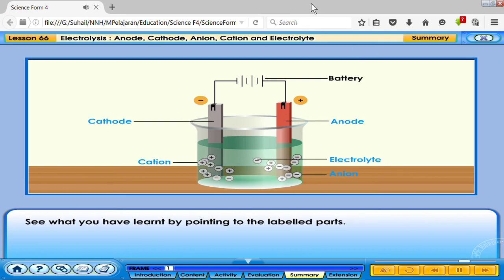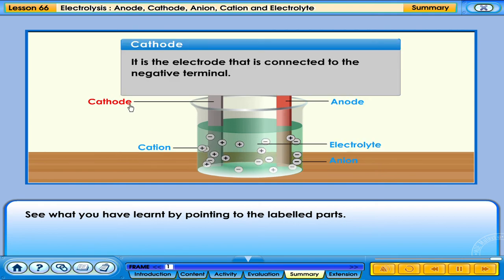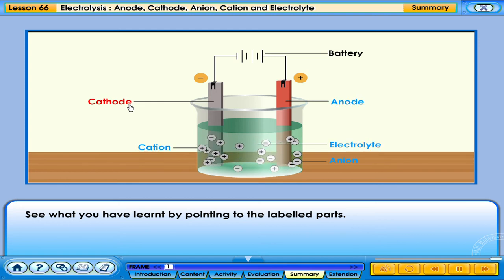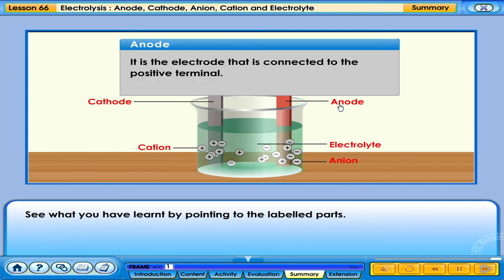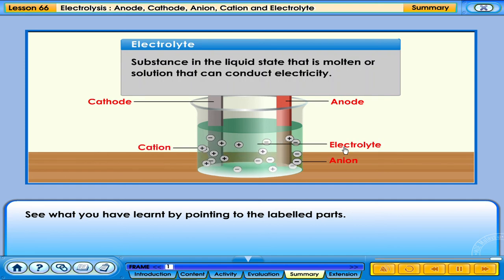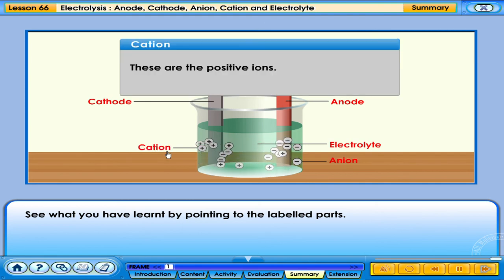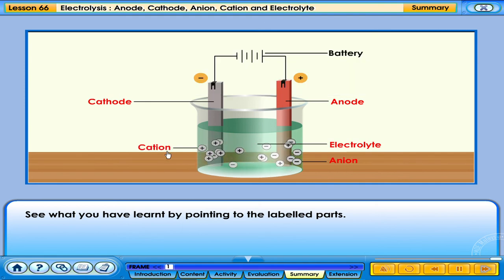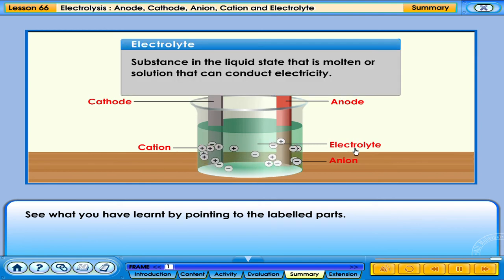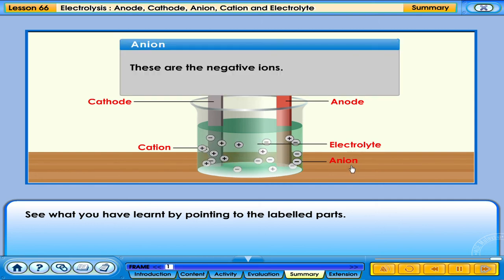See what you have learned by pointing to the labelled parts. The cathode is the electrode connected to the negative terminal. The anode is the electrode connected to the positive terminal. The electrolyte is a substance in the liquid state — molten or solution — that can conduct electricity. Cations are the positive ions; anions are the negative ions.